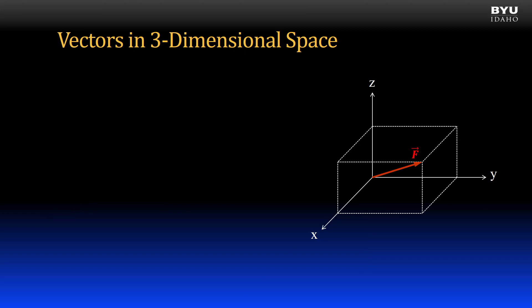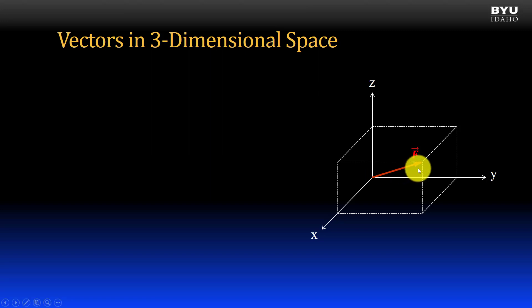Here's a representation of a vector in 3D space. Unfortunately, the screen you're looking at is two-dimensional, so some mental interpretation is required. Being able to take a 2D representation and visualize it in three dimensions is a required skill for engineers. The dotted representation of a box is there to help. The tail of the vector is at the axis origin, which is one corner of the box, and the head of the vector is at the opposite corner. The head location is offset by the x-dimension from the origin, over by the y-dimension, and up by the z-dimension.